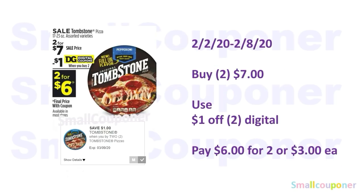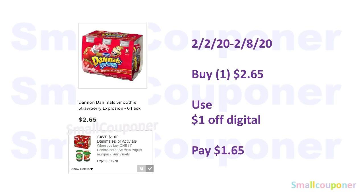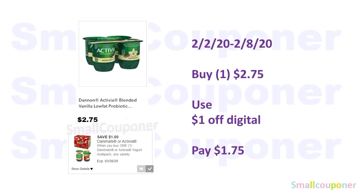The Tombstone Pizzas are on sale 2 for $7.00; use the $1 off 2 digital and pay $6.00 for two or $3.00 each. The Trident Vibes Tropical is $2.93; use the $1 off digital and pay $1.93. The Danimals 6-pack is $2.65; use the $1 off digital and pay $1.65. Or you can get the Activia at $2.75; use the $1 off digital and pay $1.75.